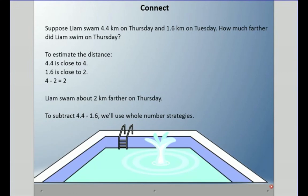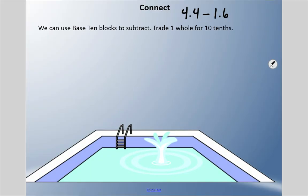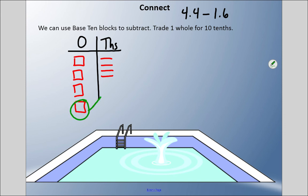To find the real answer, we're going to use base ten blocks. We have ones and tenths. So we have 4.4 to start, and we're subtracting 1.6. The first thing I have to look at is, do I even have 6 tenths? I don't. So I'm going to take one whole and trade it for 10 more tenths.